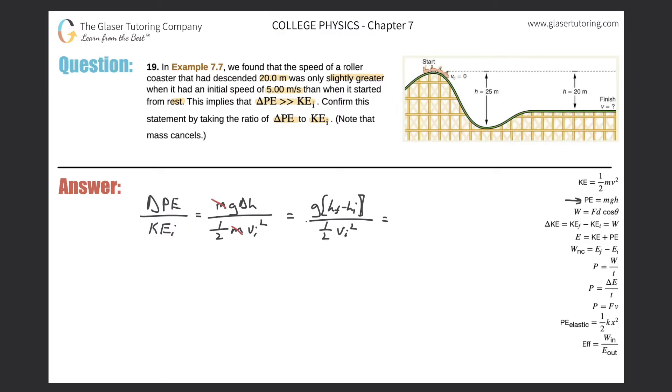Okay, so they're telling us that the coaster has descended 20 meters. So basically the change in potential energy, we're going to have a negative value here, because the final height will be lower than the initial height.